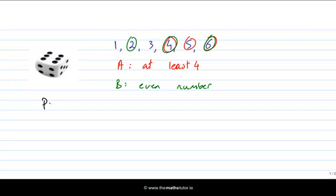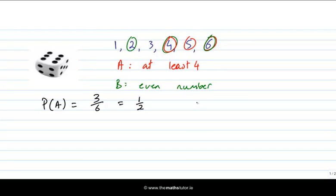The probability of event A — that we get at least four — is easy to calculate. We have three successful outcomes and six total, so we get three over six, which is a half. The probability of event B, an even number: we have one, two, three green outcomes and a total of six, so three over six again, which is a half.